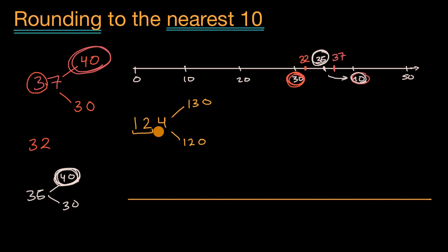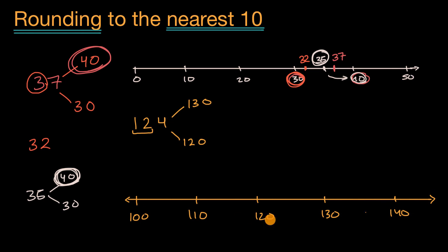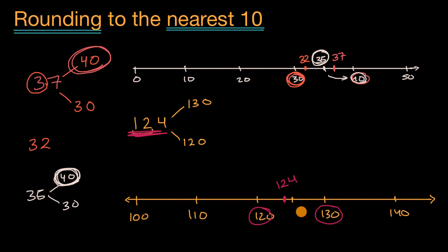Let me draw a number line starting at 100, since we need to get to 130. So: 100, 110, 120, 130, 140. The halfway mark is 125. And 124 is right over there — just below 125. So if we're picking between 120 and 130, which is it closer to? We can see it's only four away from 120, while it's six away from 130. So we round down to 120 when rounding 124 to the nearest 10.